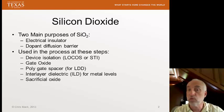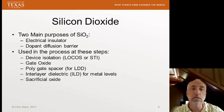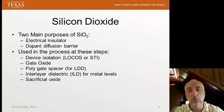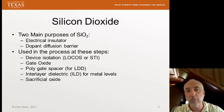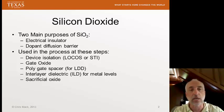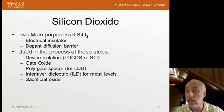There are lots of process steps where we use silicon dioxide. We've seen it in device isolation, and we'll talk more about this later in the semester. There's the LOCOS process — the local oxidation of silicon used in the 70s and 80s — and then by the 90s we had switched to STI, shallow trench isolation, which is the dominant isolation technique used today. We use oxide to isolate one transistor from another.